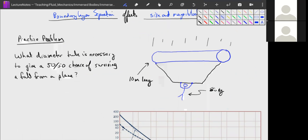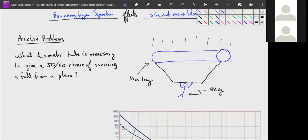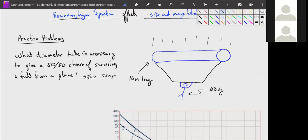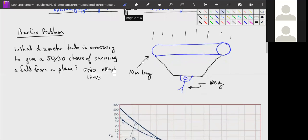There are actually a couple questions wrapped up in this. You should know, this is just useful in your life, that the 50-50 point of running into a flat wall and surviving is at 38 miles per hour, which is about 17 meters per second. So 38 miles per hour is our goal, 17 meters per second.